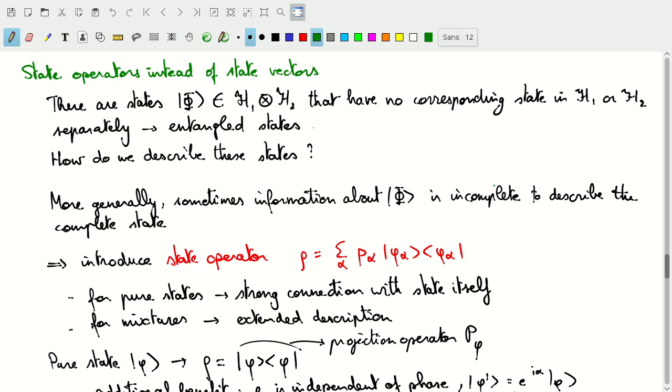Now, there are states, as we know now, that do not have a corresponding state that can be written as a tensor product of multiple subspaces. There are these entangled states, and it's more difficult to describe those states with the state vectors.